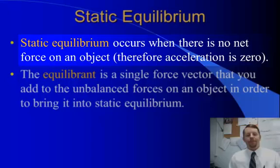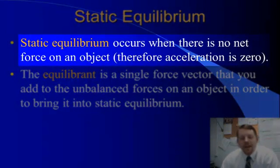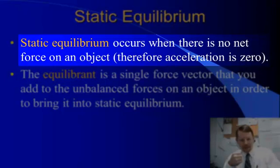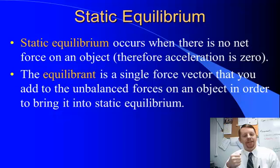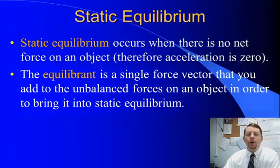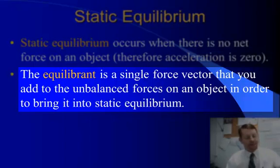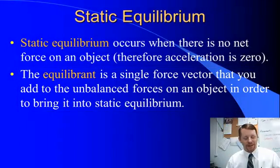Static equilibrium is what happens when you have no net force on an object — all the forces are balanced. A coffee mug sitting on a table is in static equilibrium: gravity pulls it down and the normal force from the table pushes it up, they're exactly balanced, and the object doesn't accelerate. The equilibrant is a single force vector you add to unbalanced forces in order to bring an object into static equilibrium.